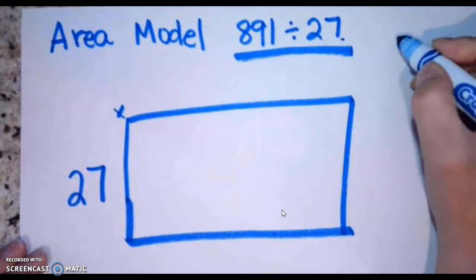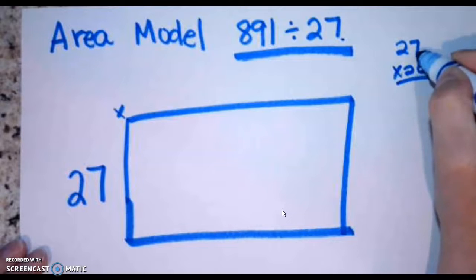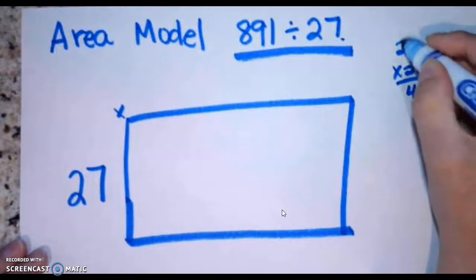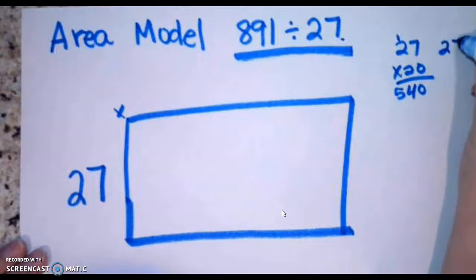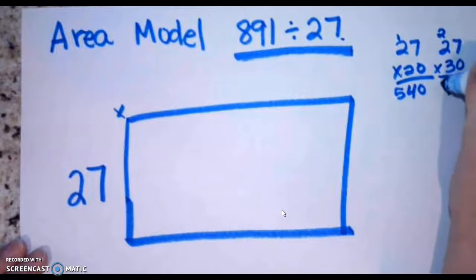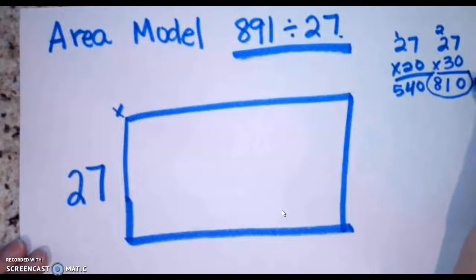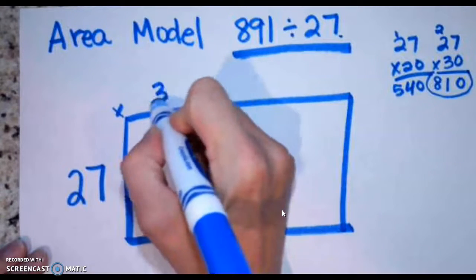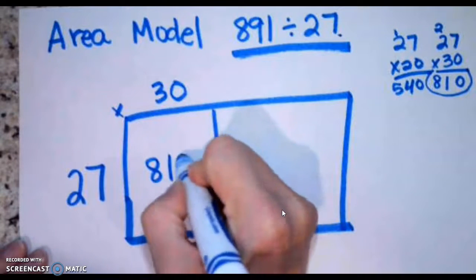27 times 20 — I can even write this off to the side. I know that's the same as 27 times 2 with a zero on the end, so 540. That's getting closer. Let's try 27 times 30. 3 times 7 is 21, carry the 2... using that shortcut of multiplying 3 times 27 and adding a zero on the end gives me 810, which gets me pretty close. So I'm going to write 30 on top of my model and draw a line. 27 times 30 equals 810.